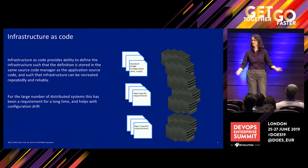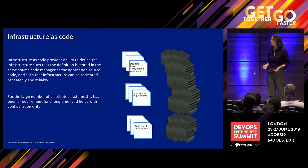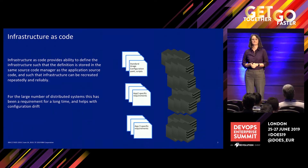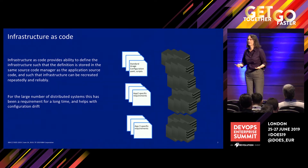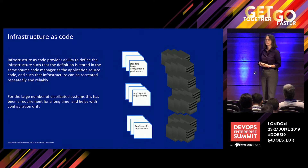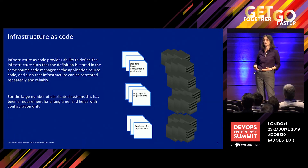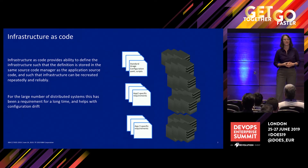Just to make sure we're all on the same page: infrastructure as code means making sure all the configuration and information is stored so that I can build new systems, avoid configuration drift, and provision quickly. In the distributed space, we have hundreds, thousands of little boxes running around, and we need to keep the systems consistent. It's very important to be able to provision a new system. If I have 1,000 boxes and I build them all manually, what's the chance they're going to be the same? Zero.